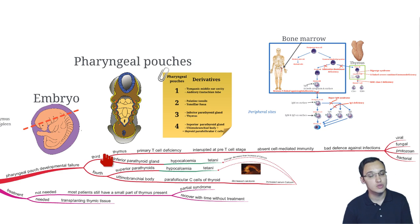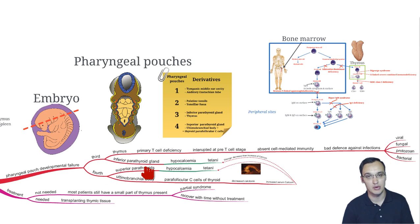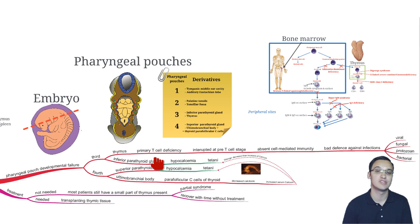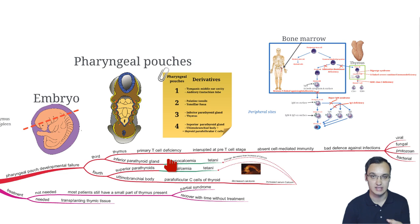The third pharyngeal pouch also gives rise to the parathyroid gland — specifically the inferior part — and the fourth pouch gives rise to the superior part. If you don't have a parathyroid gland, then you don't secrete calcium. So you have hypocalcemia, meaning less calcium in the blood, and then you get tetany. Tetany is a contraction of all the muscles in your body, which is very dangerous — it's fatal.